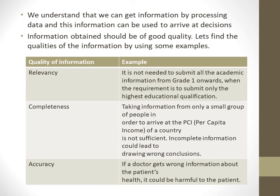The second quality is completeness. Taking information from only a small group of people to arrive at the population count of a country is not sufficient. For example, to calculate the population of a country, you should get an average for an area, multiply it by the total country area, and then you can get the whole country's population. The information should be complete.